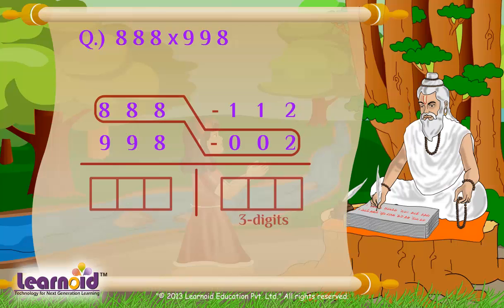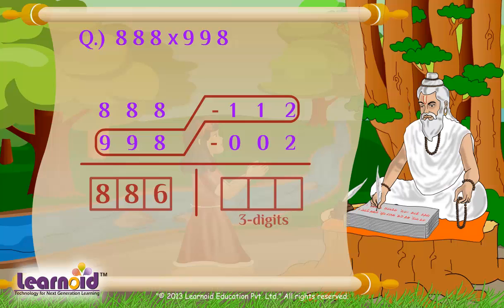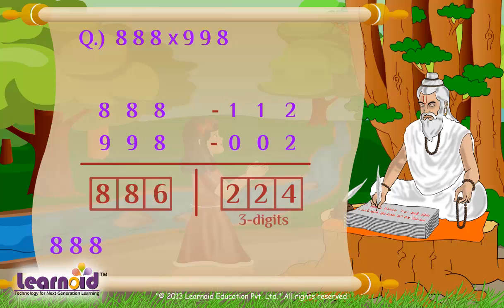First, cross subtraction: 888 minus 002 equal to 886, or 998 minus 112 equal to 886. So we get 886 on left. For finding right digits, we multiply vertically. 112 multiplied by 002 equal to 224. So after multiplication we get 886224 as answer.